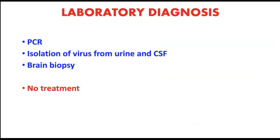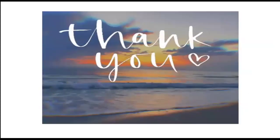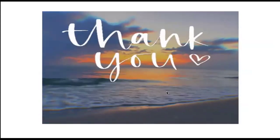Laboratory diagnosis includes PCR, viral isolation from urine or CSF, or brain biopsy. Note that there is currently no treatment for PML. To summarize DNA viruses: herpes viruses are divided into eight groups — HHV1, 2, and 3 are alpha herpes viruses; HHV4 and 8 are gamma herpes viruses; and HHV5, 6, and 7 are beta herpes viruses. That concludes our discussion of DNA viruses.